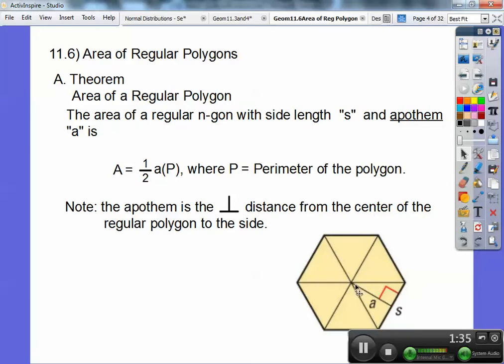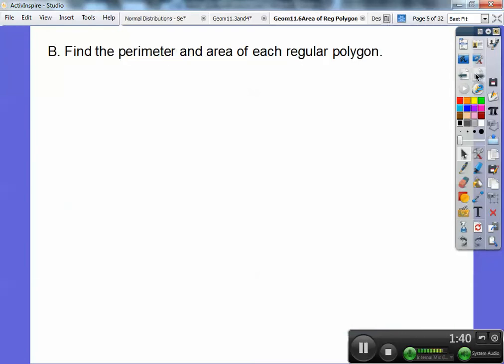So if you can get the apothem and that, then you just plug it into the formula and bing, bang, boom, and you got the answer. Here's a few examples. Find the perimeter and area of each regular polygon.